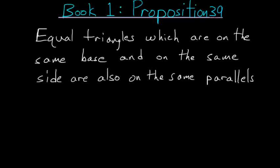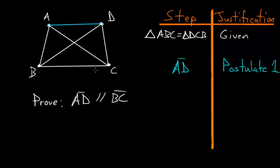So if we start with two triangles, triangle ABC and triangle DCB, and we know that they're equal to each other, then what we're essentially trying to prove, if we draw some line between A and D (which we can do because of postulate number one), we're trying to prove that this line AD is parallel to this line BC.